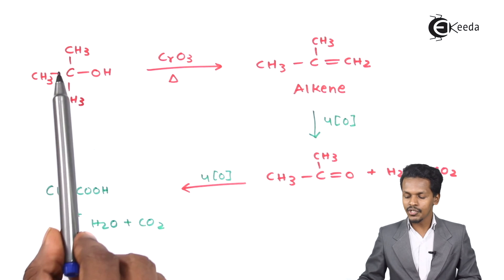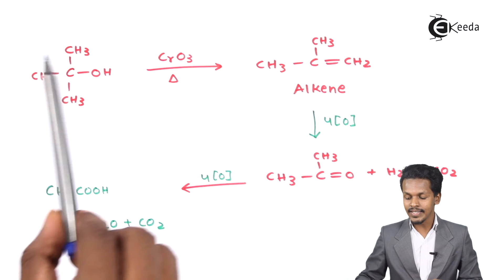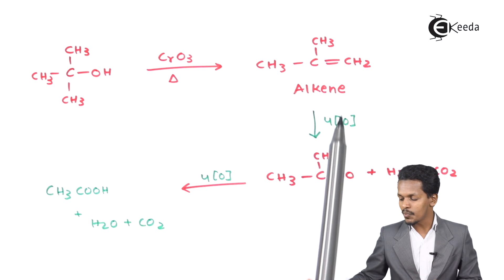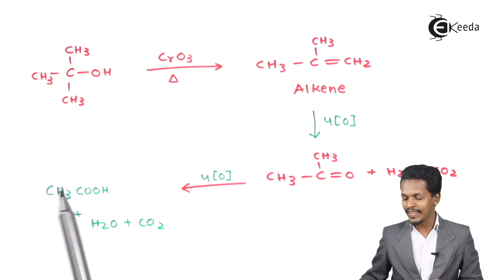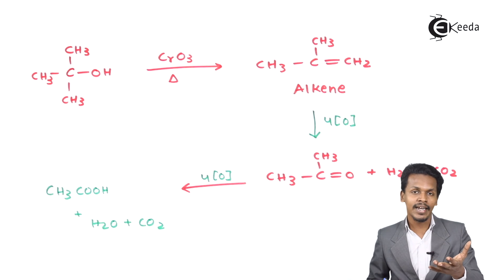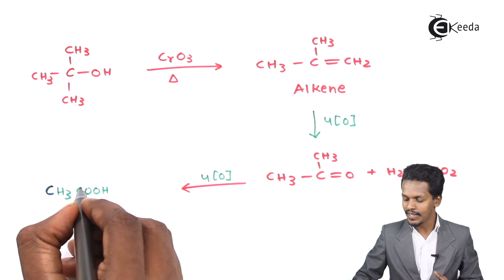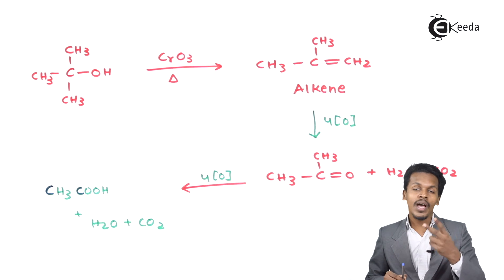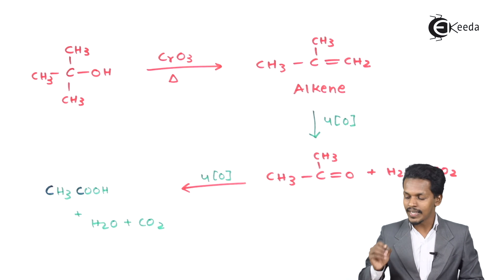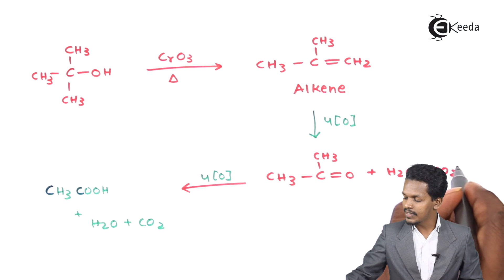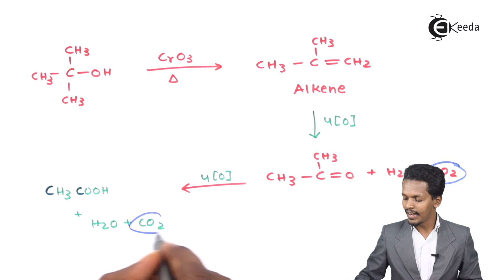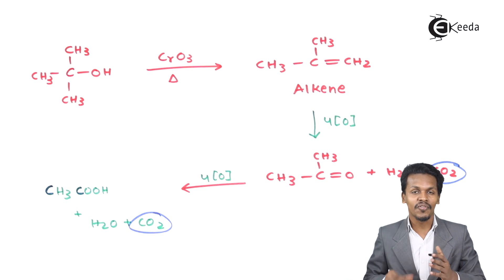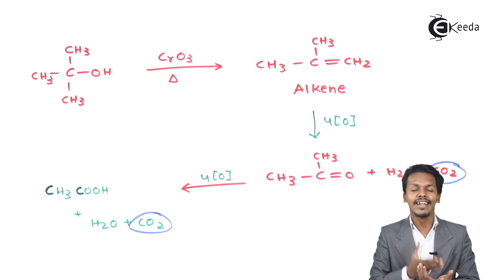If you observe, the tertiary alcohol we considered had 4 carbon atoms. But after undergoing the oxidation process, the carboxylic acid product contains only 2 carbon atoms — meaning 2 carbon atoms have been lost. Those 2 lost carbon atoms are released as CO2. That is how the oxidation reaction of primary, secondary, and tertiary alcohol works.